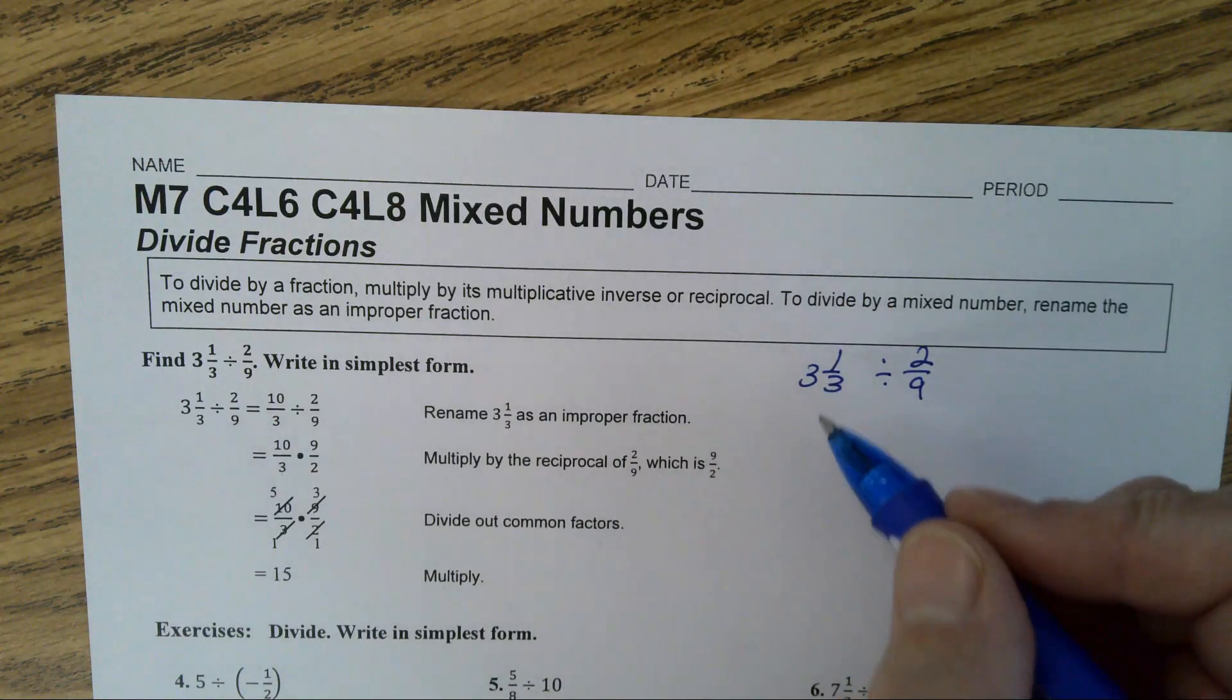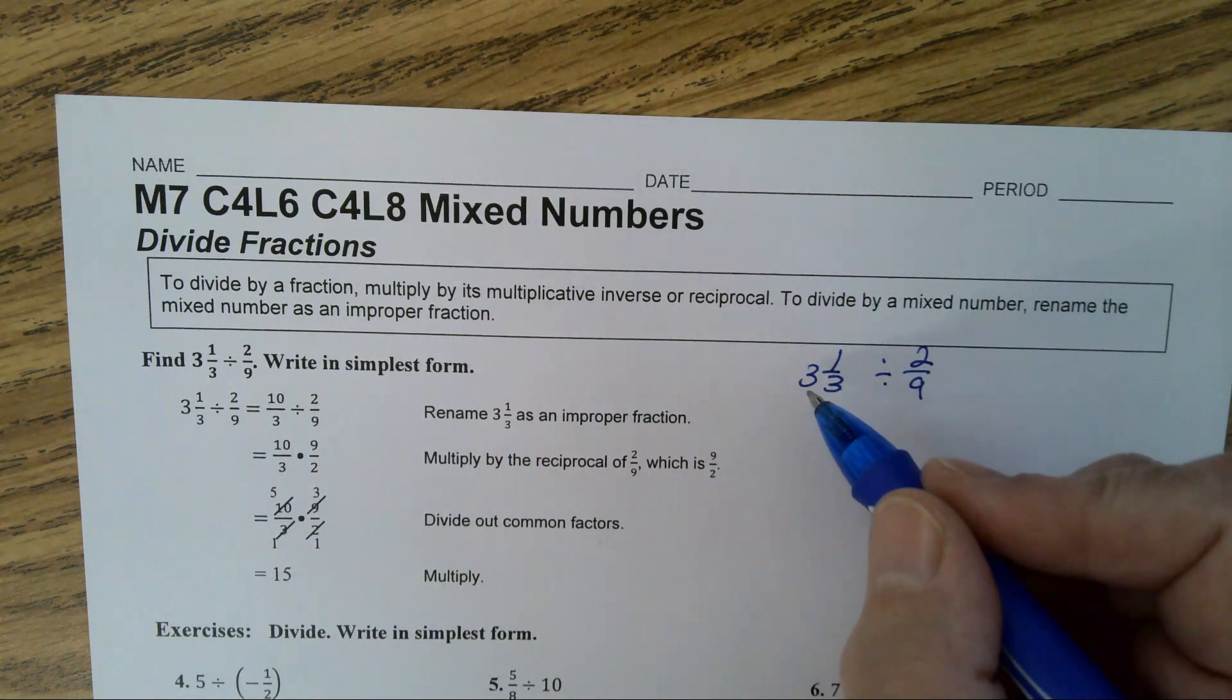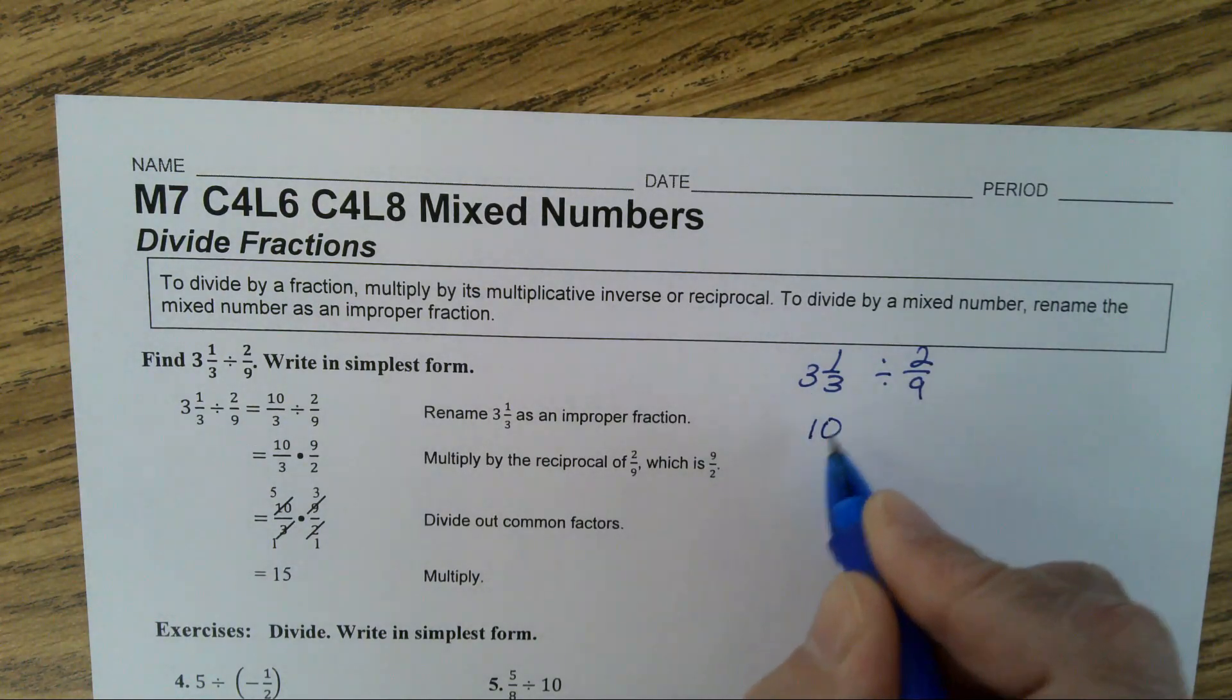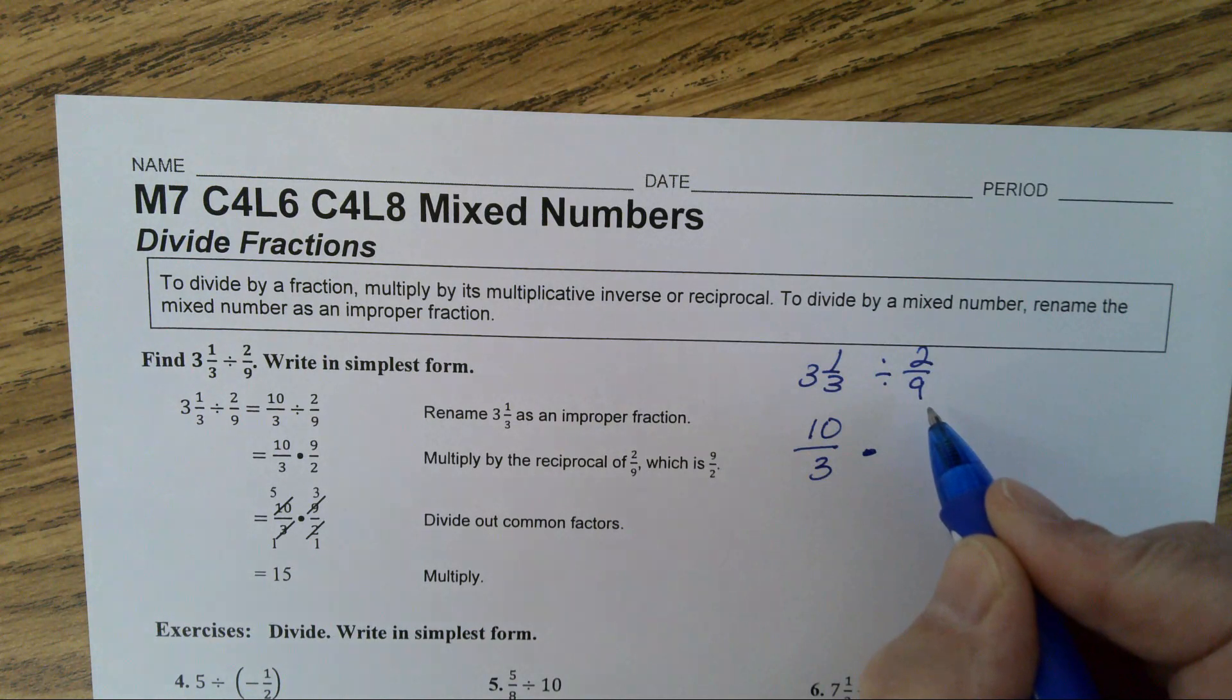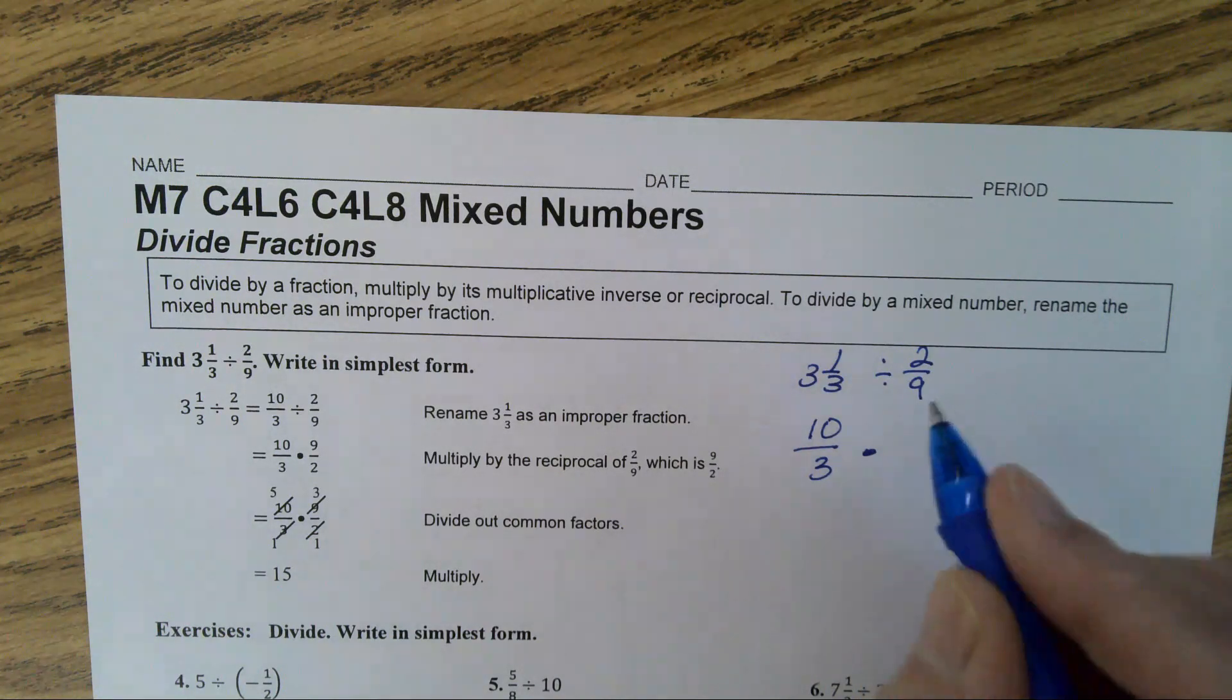You multiply 3 times 3 is 9. Plus 1 is 10. 10 thirds times the reciprocal or the multiplicative inverse of 2 ninths is 9 over 2.